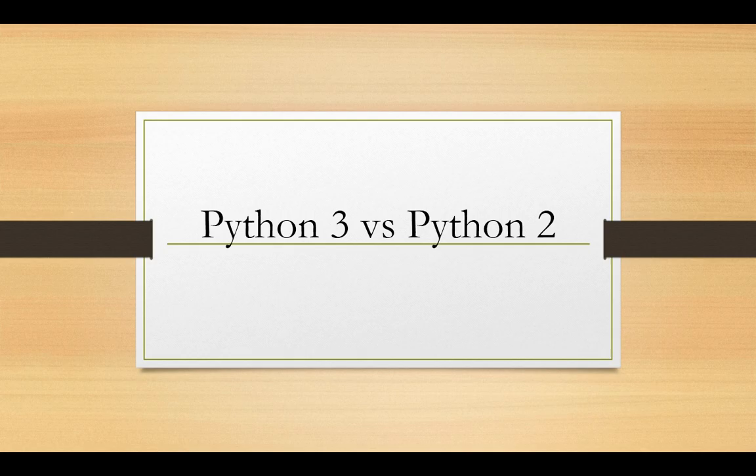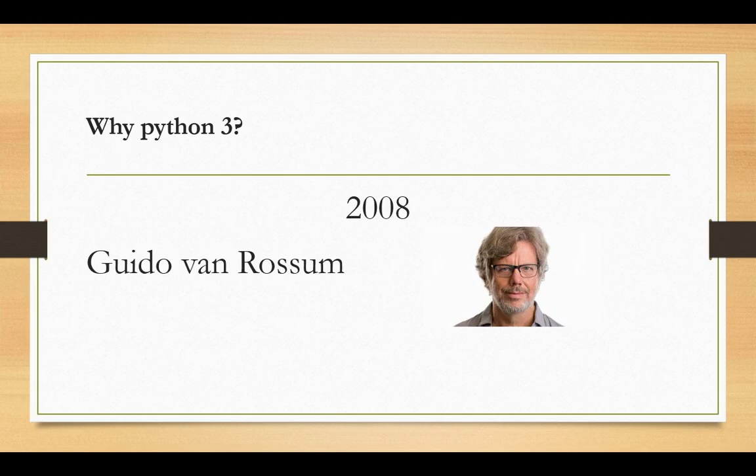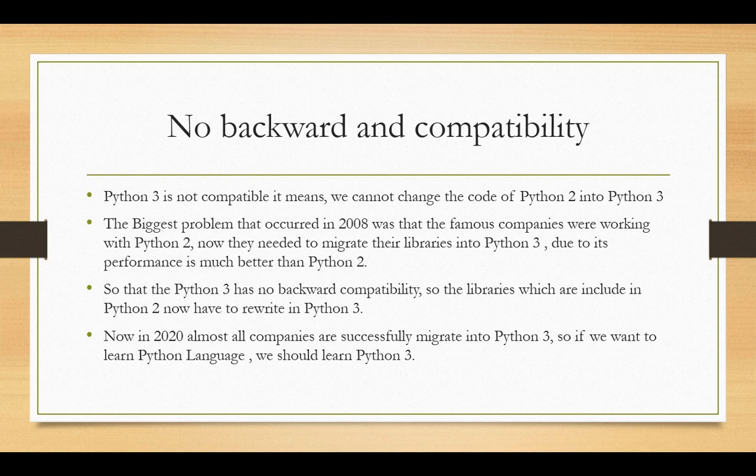As you might have heard, there are some differences between Python 2 and Python 3. Let me tell you about its brief history. In 2008, Guido Van Rossum thought that there were many drawbacks in Python 2, so to resolve all those drawbacks he invented Python 3.